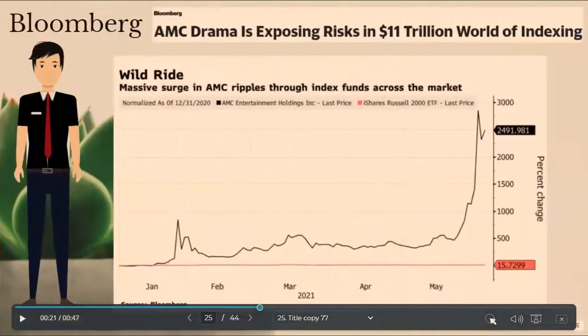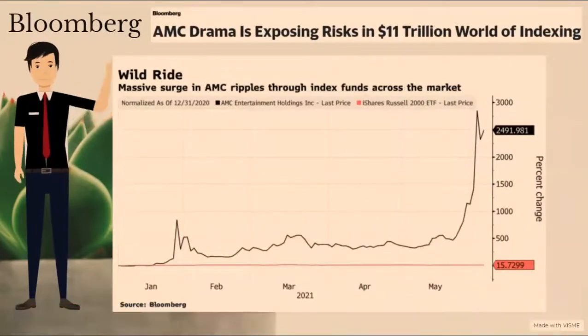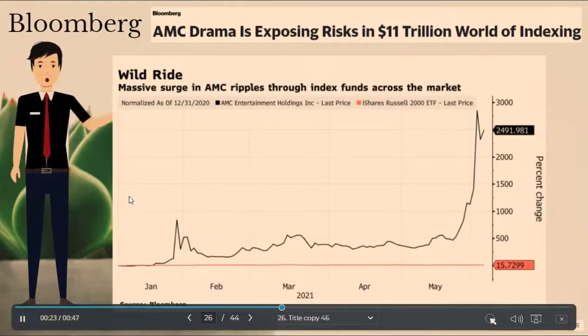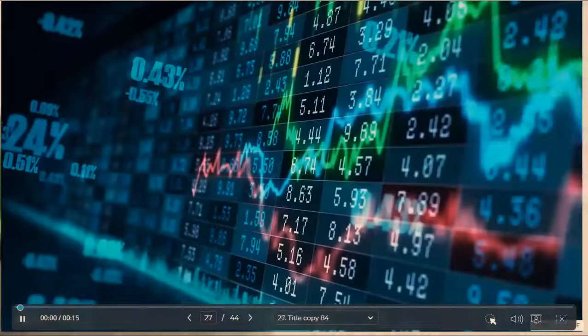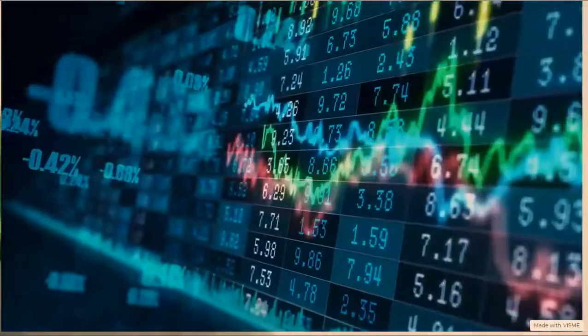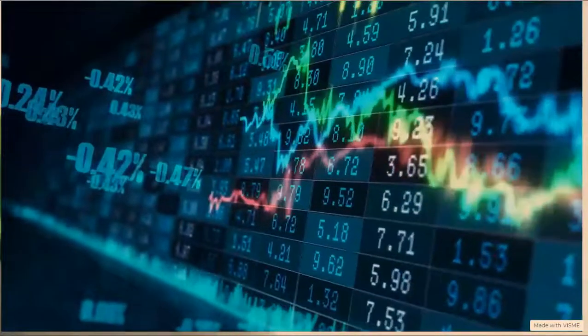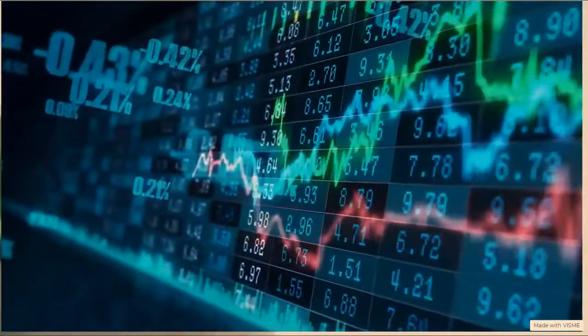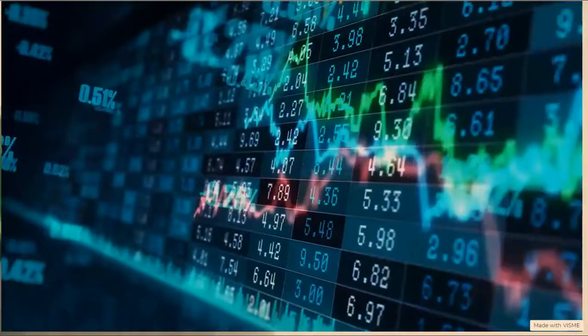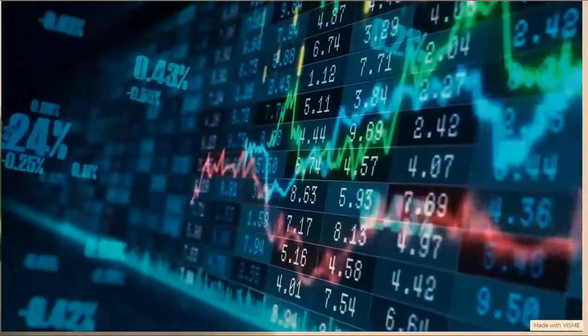Now, Forbes also wrote an article on AMC exposing risks to index funds. Take the $68 billion iShares Russell 2000 ETF, ticker IWM. In the past week through Thursday, AMC powered 70% of the product's advance. The stock was responsible for less than one-tenth of the fund's return in the previous week. The AMC effect can be seen across a range of funds. Alongside IWM, the $17.5 billion iShares Russell 2000 value ETF, ticker IWN, and $72 billion iShares core S&P small cap ETF, ticker IJR, have also seen the stock's influence climb.